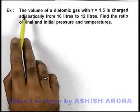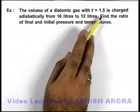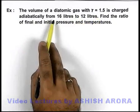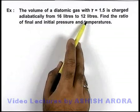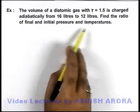In this example we are given that the volume of a diatomic gas with gamma equal to 1.5 is changed adiabatically from 16 liters to 12 liters. We are required to find the ratio of final and initial pressure and temperatures.